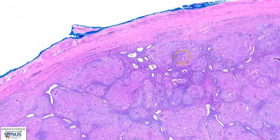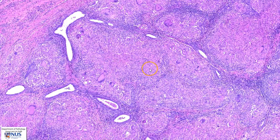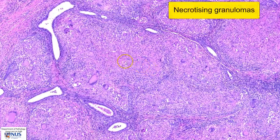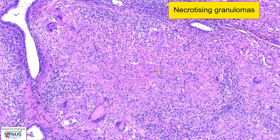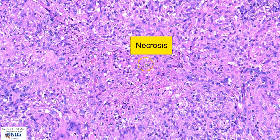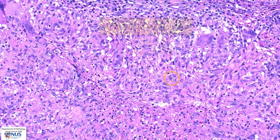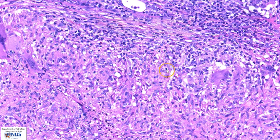Most of the parenchyma has been replaced by these rounded structures, and these are all individual necrotizing granulomas. For example, in this particular area, we can see that there is a central area of granular eosinophilic necrotic material. At the periphery, we can see these epithelioid histiocytes admixed with lymphocytes.